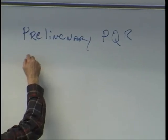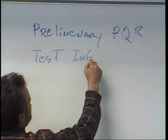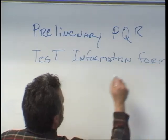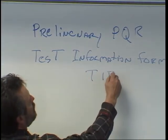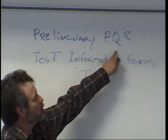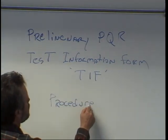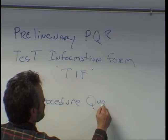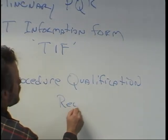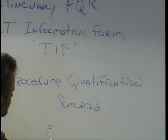Another name for it is a Test Information Form, called a TIF for short. What we have to do is we do a Procedure Qualification Record. This record records all of those essential variables that were just mentioned.